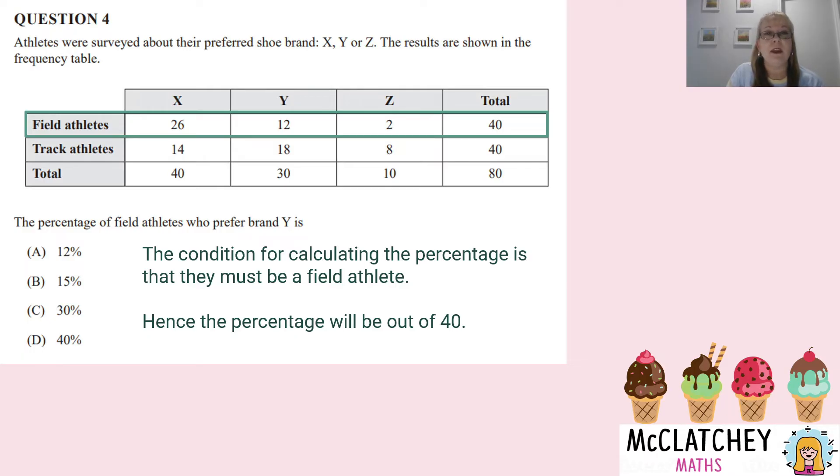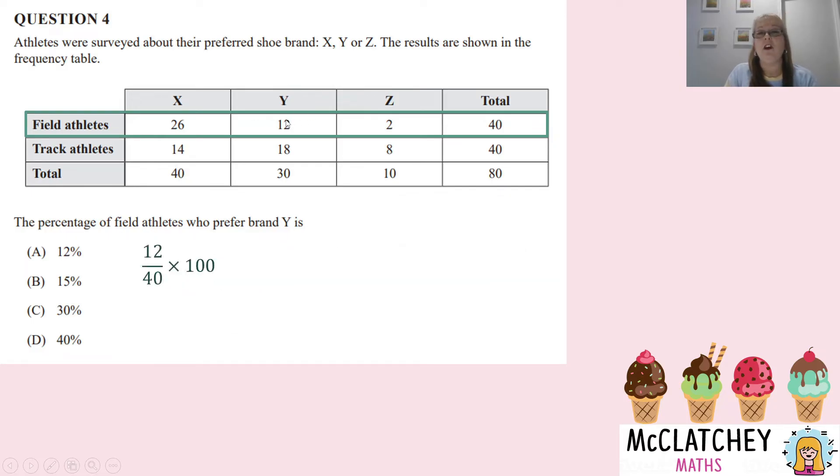So if we look at what brand Y is, it's 12. 12 of the field athletes preferred brand Y. So it'd be 12 out of 40.